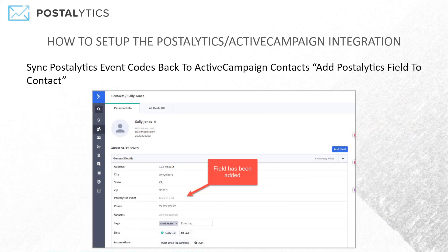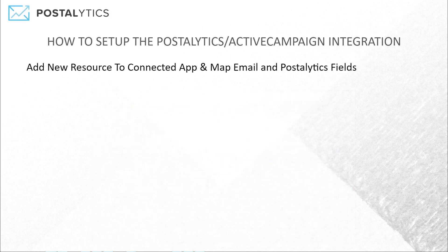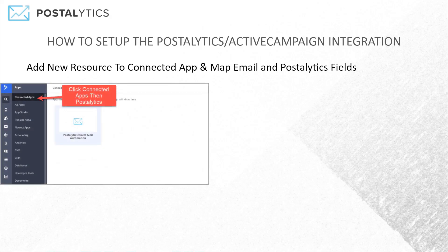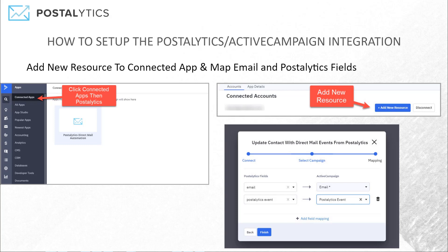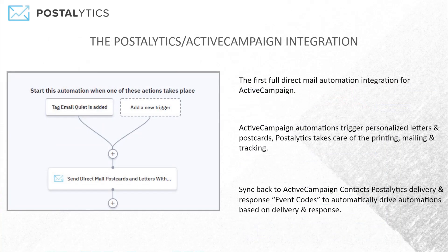You can also set up a custom field in ActiveCampaign to receive event codes and statuses back from the Postalytics direct mail campaign. We can sync delivery codes and response codes back to ActiveCampaign, which you can then use to drive other automations. It's quick and easy — you add a new resource, connect the campaigns back together, do a small mapping, and you're good to go.